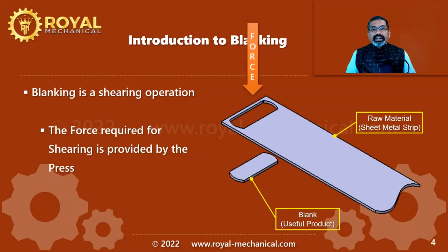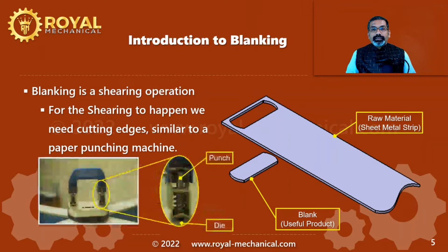The force required for the shearing operation is provided by the press machine. For the shearing to happen, we need cutting edges — something similar to the paper punching machine. If you closely observe the paper punching machine, it has a punch and a die.